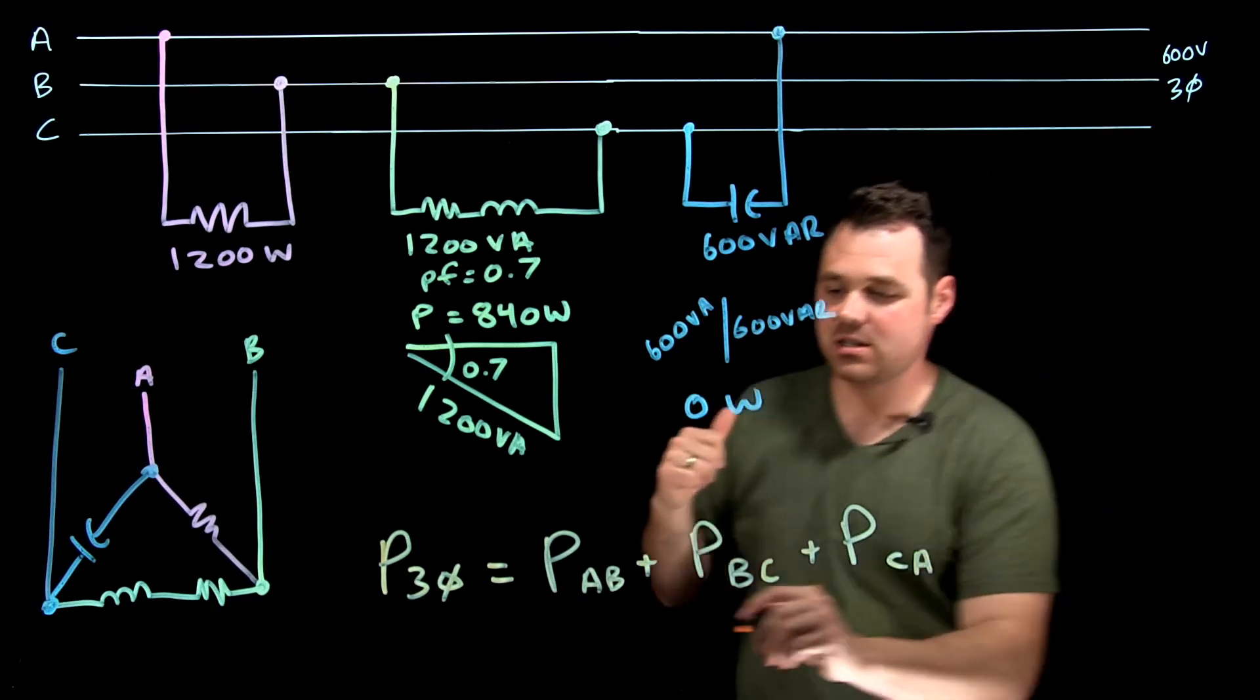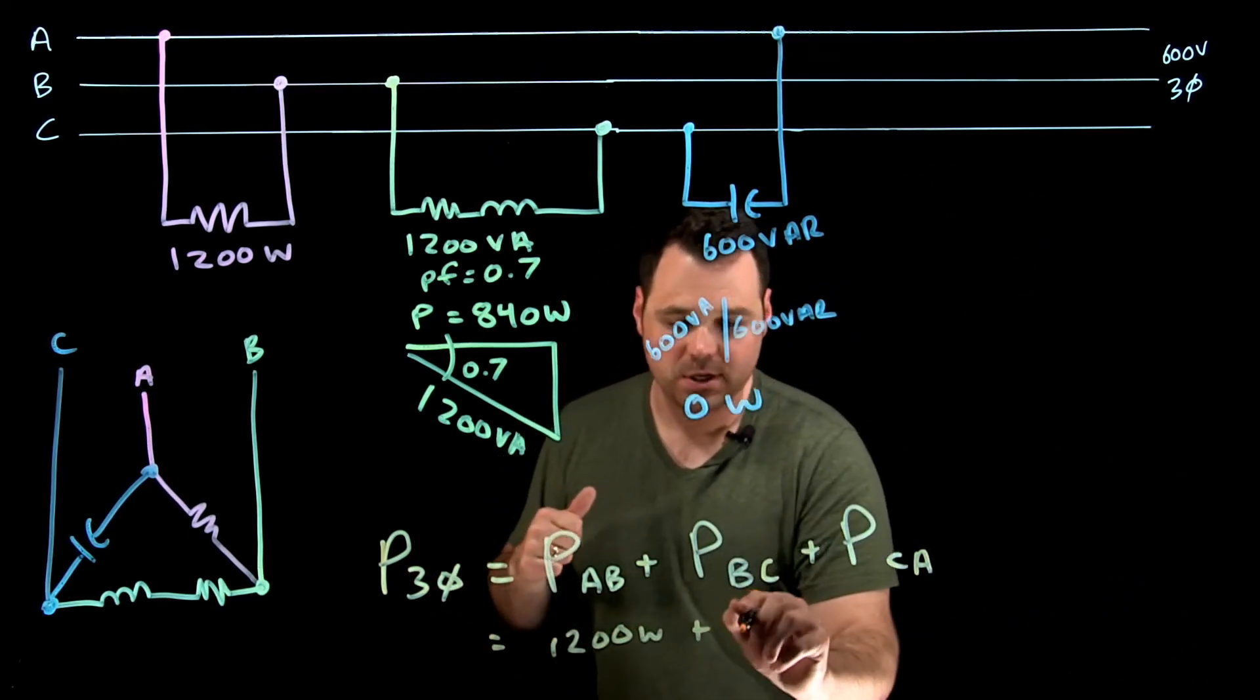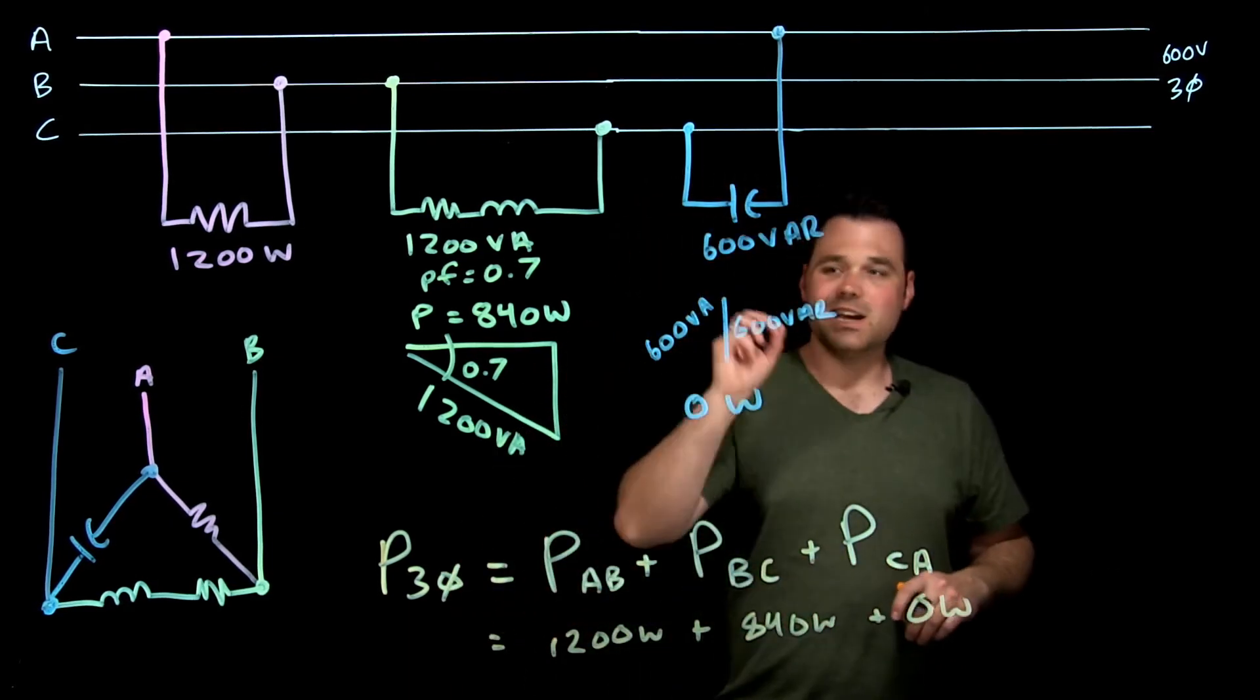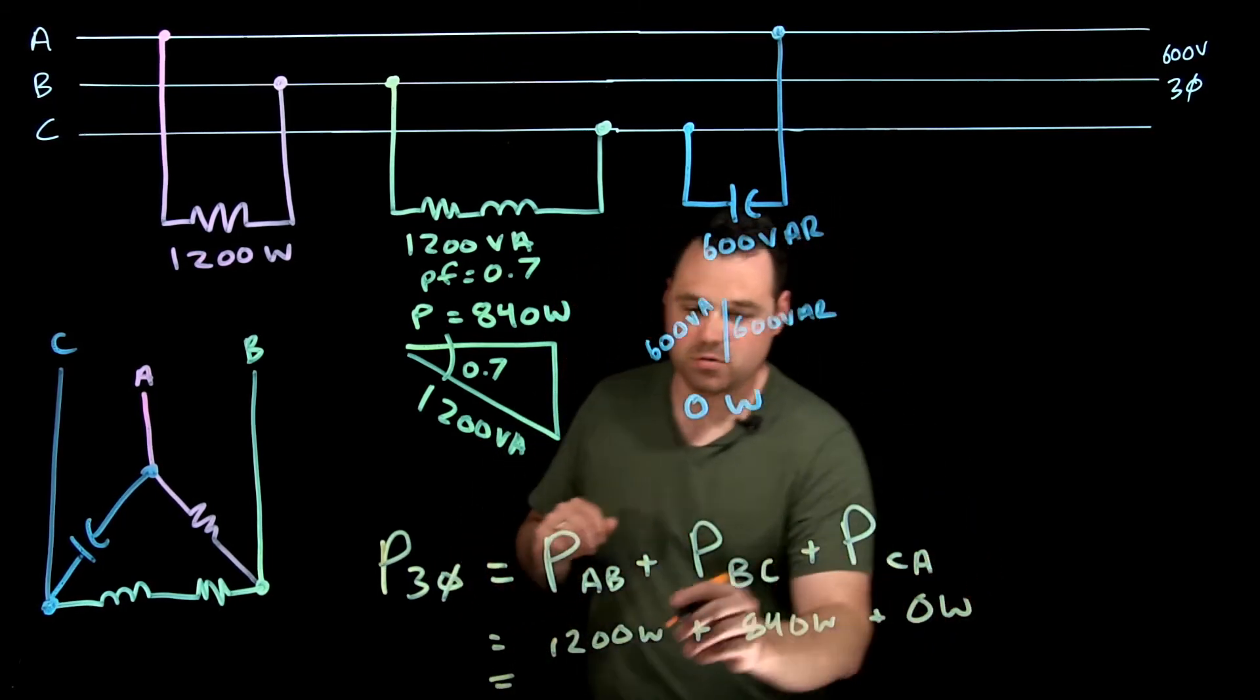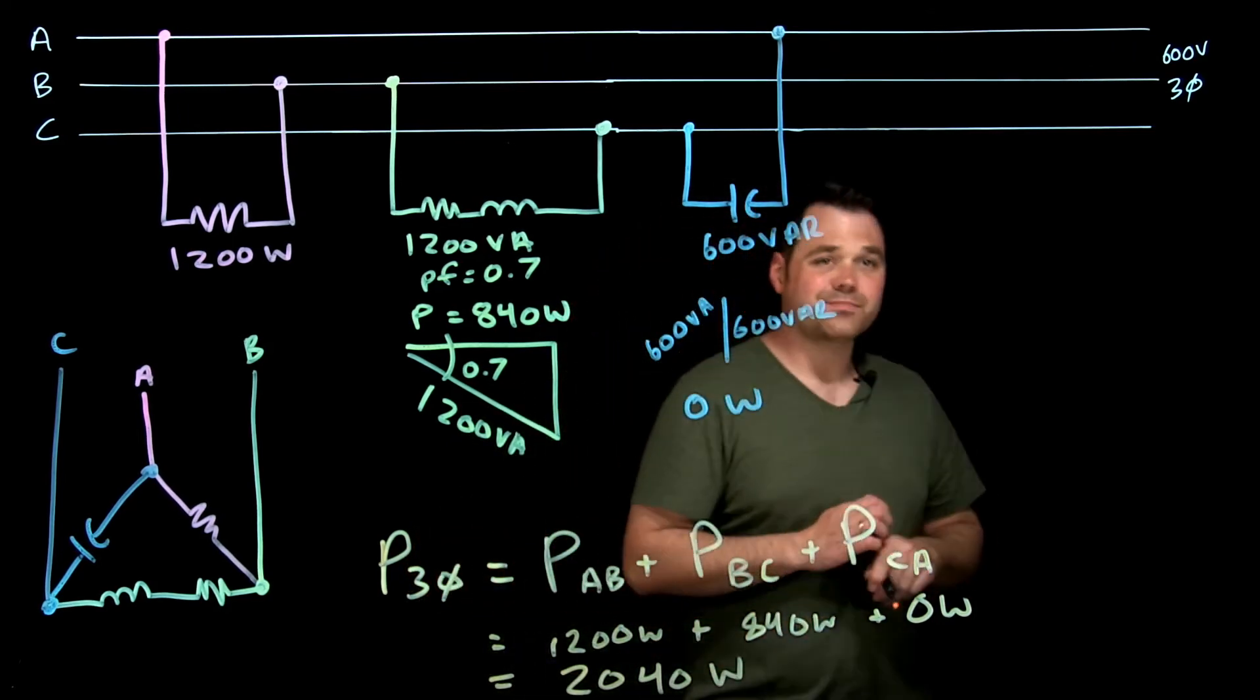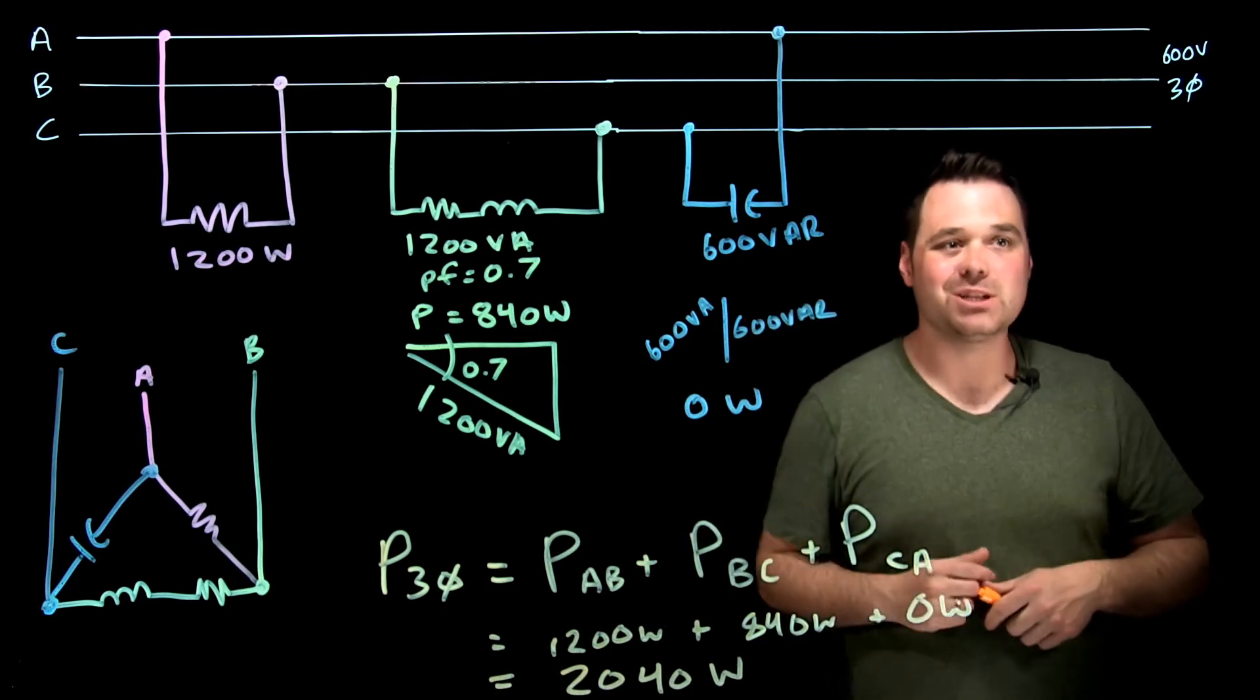So in our case, we would be 1200 watts plus 840 watts plus 0 watts. So at the end of the day, our calculation comes out to around 2040 watts. That's how you would calculate the three-phase power in an unbalanced load.